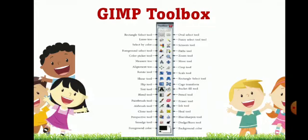This is the GIMP toolbox which we are going to learn in this chapter. There are different tools: rectangle tool, lasso tool, select by color, foreground, color picker, move tool, crop tool, scale tool, bucket fill, and pencil tool. These are the toolbox tools we are going to learn in this chapter.